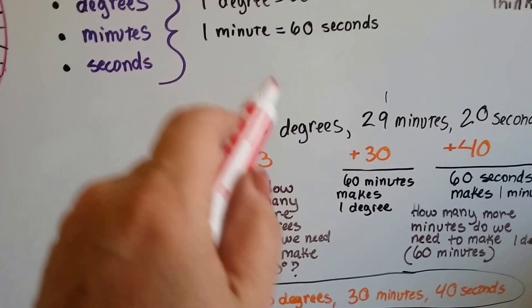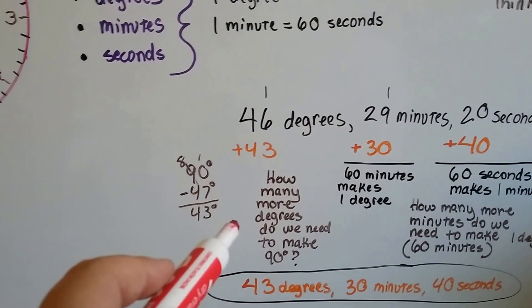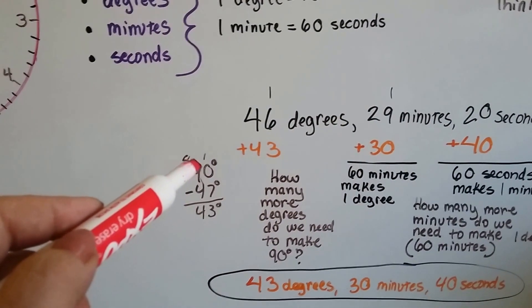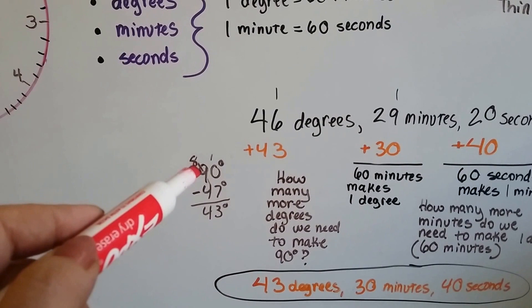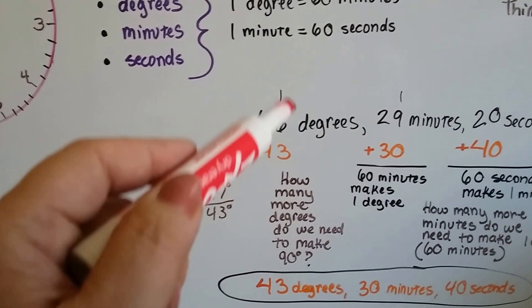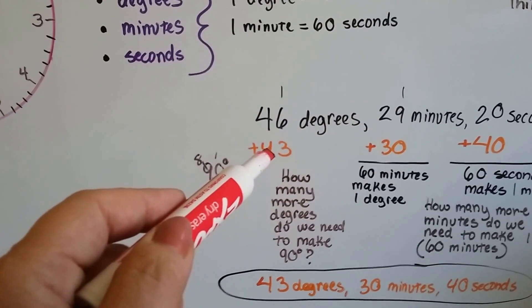So now we've got 47 degrees here, and how many more degrees do we need to make 90? So we take our 90 degree measure that complementary angles equal, and we subtract the 47 degrees here, and we get 43. So we need 43 more degrees.